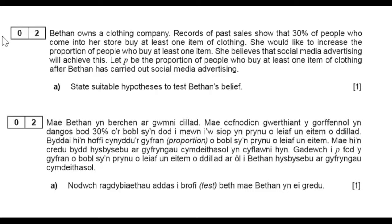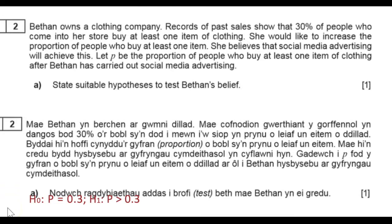Part A: state suitable hypotheses to test Bethan's belief. Bethan's belief is that if she uses social media advertising she will increase the proportion of people that buy at least one item from her store. The null hypothesis is what is happening originally, and originally 30% of people who come in the store buy at least one item. So the null hypothesis H₀ is P = 0.3. Since she would like to increase the proportion, we want P to be greater than 0.3, making this a one-tail test. So the alternative hypothesis H₁ is P > 0.3.